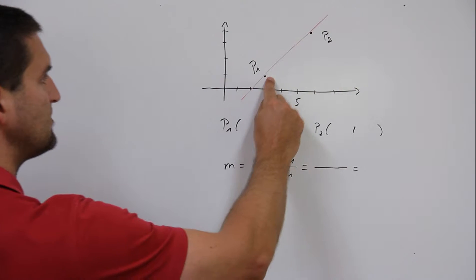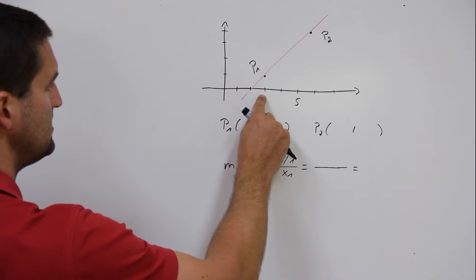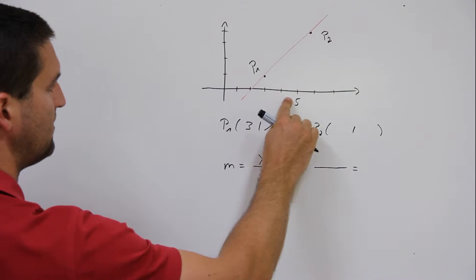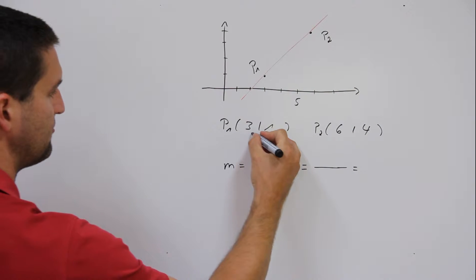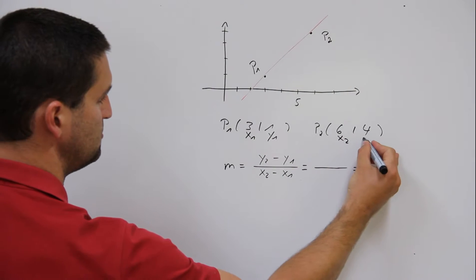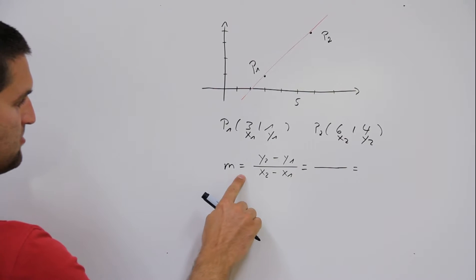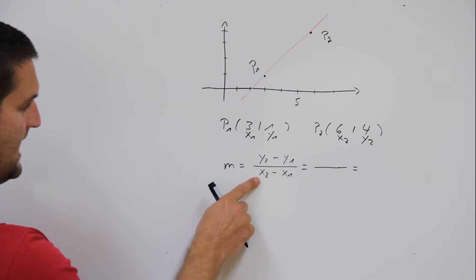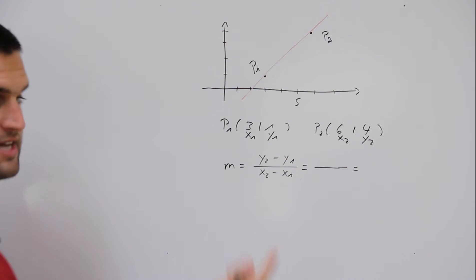It's that easy. You have two points of a linear function: P1 is (1, 3) and P2 is (4, 6). We have x1, y1 and x2, y2. The formula for the slope m is equal to y2 minus y1 divided by x2 minus x1.